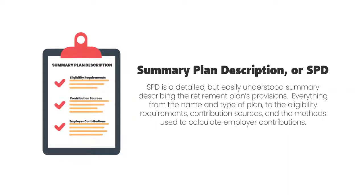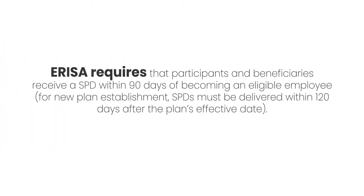The SPD is a detailed but very easily understood summary describing the retirement plan's provisions — everything from the name and type of plan to eligibility requirements, contribution types, and the methods used to calculate employer contributions. ERISA requires that participants and beneficiaries receive an SPD within 90 days of becoming an eligible employee. When there's a new plan established, SPDs must be delivered within 120 days after the effective date.